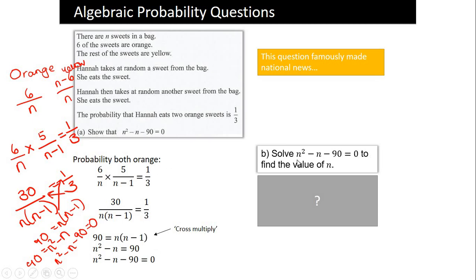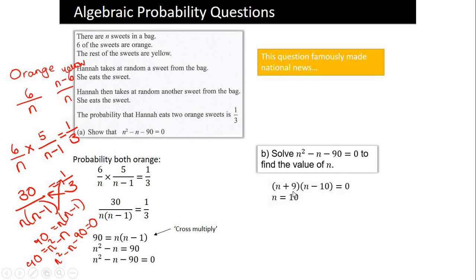Factorising the quadratic N² − N − 90 = 0: we need a pair of numbers that multiply to −90 and add to −1. That's 9 and −10. So the factors are (N + 9)(N − 10) = 0, giving N = −9 or N = 10. We can't have a negative number of sweets, so N equals 10. This question is particularly tricky — if you followed it, brilliant; if you're confused, don't worry. Now go and have a go at the Knowledge Organiser quiz; there won't be anything as difficult as this in there.